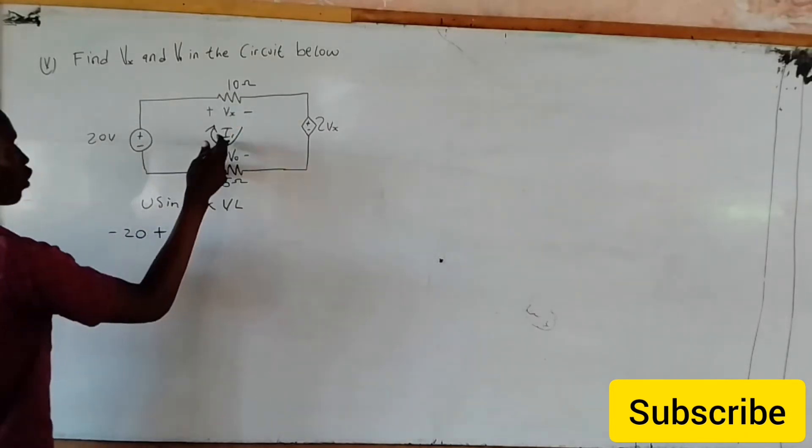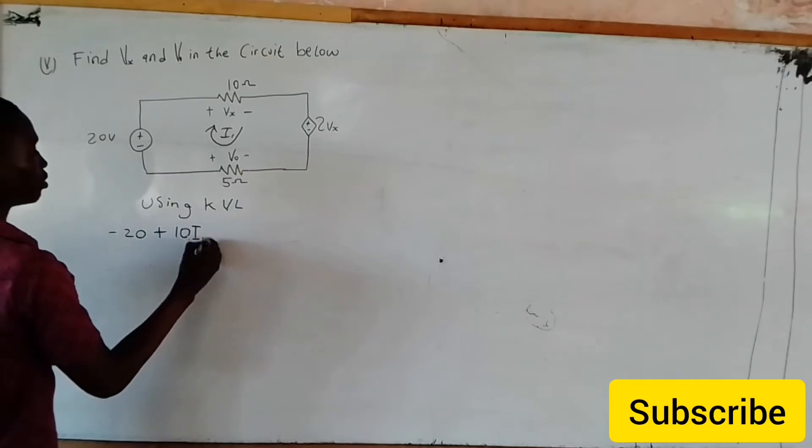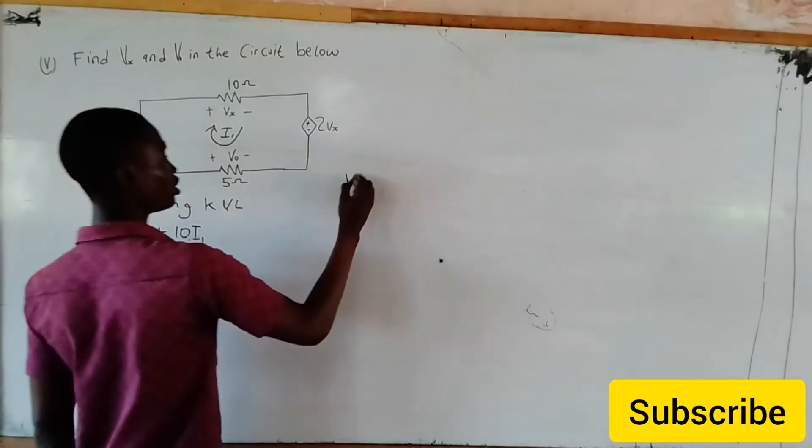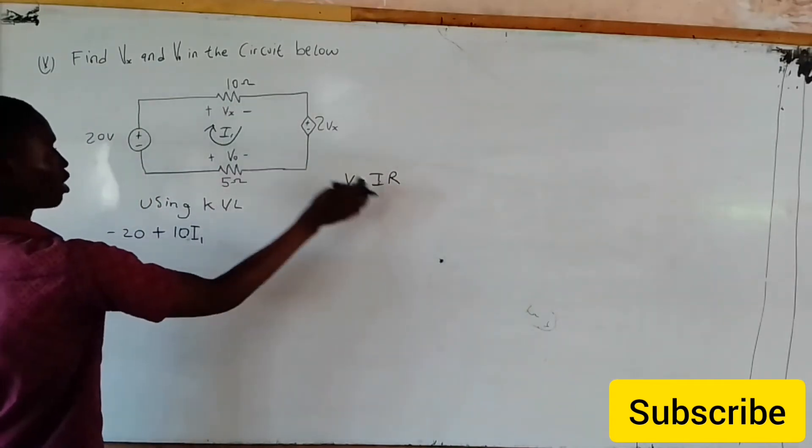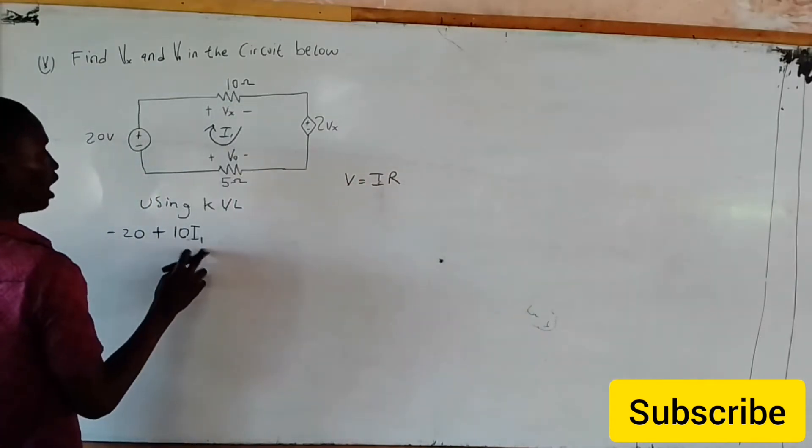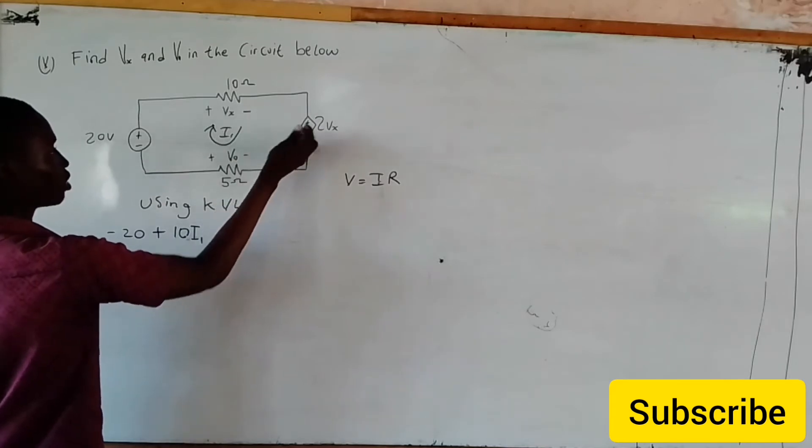10 ohms. Which current is playing here? I1, is that not? Just as V equals IR. I is our I1. Then it comes to here plus Vs.